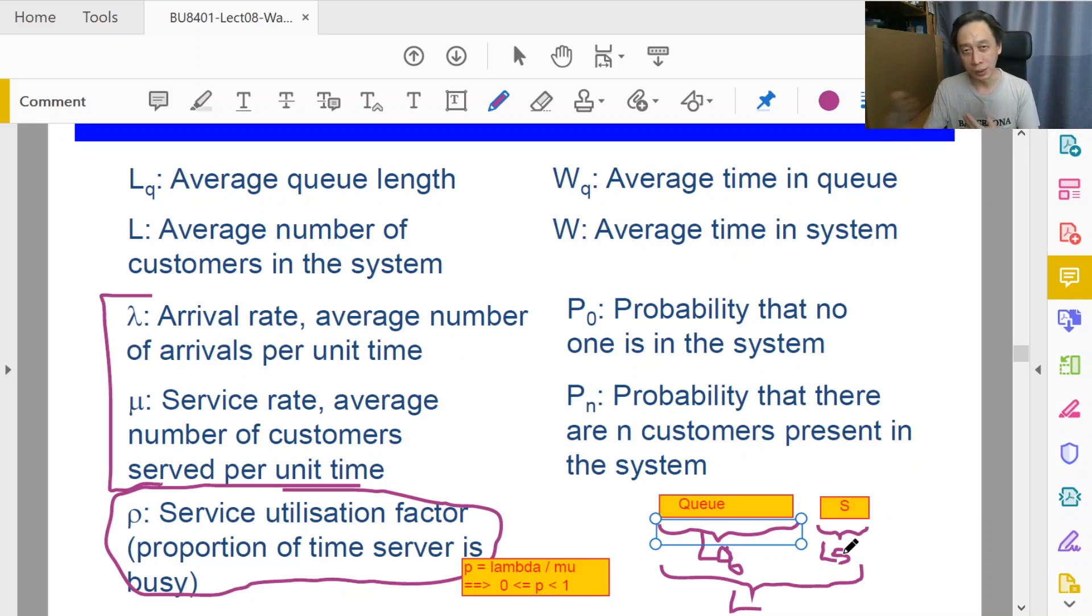Now we have one server, so it is either zero or one. So we average up, it'll be a number between zero to one. But when we have multiple servers, then it could be a number between zero to k, the number of servers in the service station.